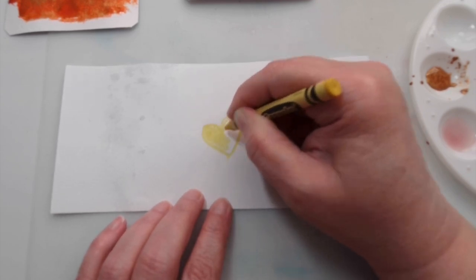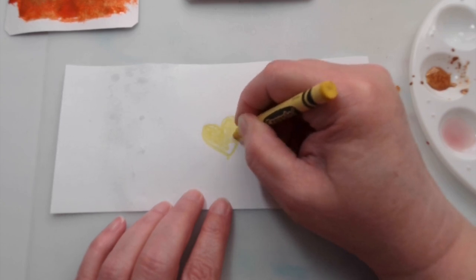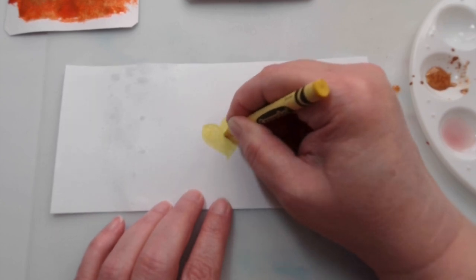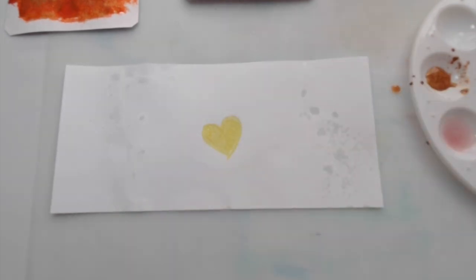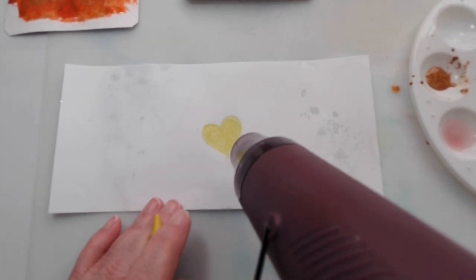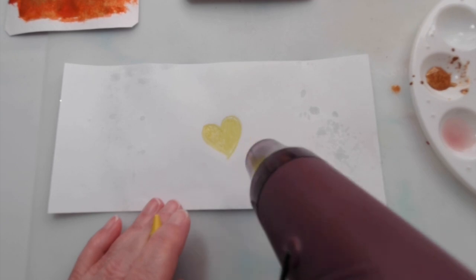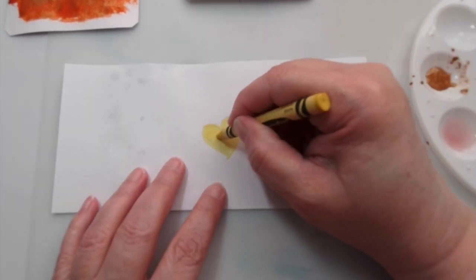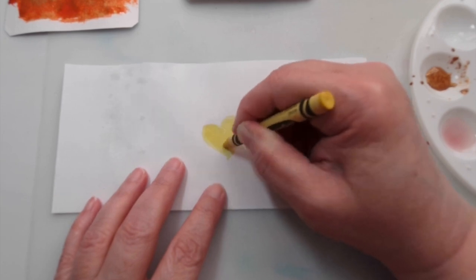But a lot of times when you work with crayons, it looks like a kid's drawing because you can see the scribble marks. You can see the strokes that you're making with the crayon. So there's a really easy tip for this to make these look a little bit different. And that is heat it with your heat tool for just a couple of seconds. That will melt the wax and make it much smoother. You don't want to melt it so much that it bleeds out into the paper.